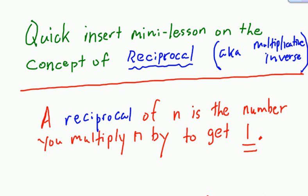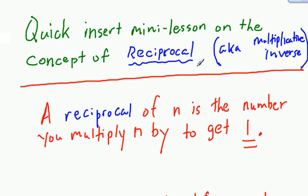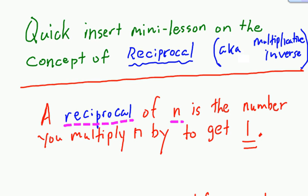Before we go on to the next type of one-step equation, I'm going to do a quick mini-lesson on the concept of reciprocal. A reciprocal — also known as multiplicative inverse — they mean exactly the same thing. Reciprocal is just one word instead of two, so typically we'll talk about reciprocals. The reciprocal of n is the number you multiply n by to get 1.